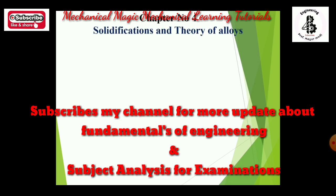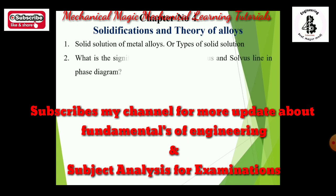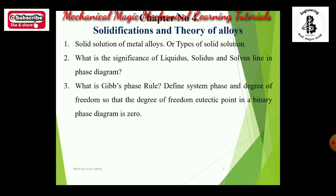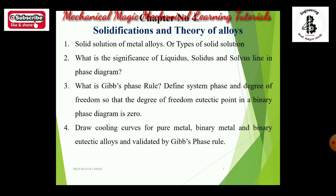Chapter 4 is solidification and theory of alloys. Topics include: solid solutions or types of solid solutions — maximum chance for 4 marks; significance of liquidus, solidus, and solvus lines in phase diagrams for 4 marks. Most important for 7 marks: what is Gibbs phase rule — define system, phase, and degree of freedom, noting that the degree of freedom at the eutectic point in a binary phase diagram becomes 0. Also: draw cooling curves for pure metal, binary metals, and binary eutectic alloys and validate using Gibbs phase rule — maximum chance.